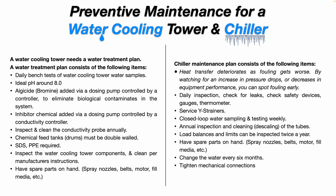Load balances and limits can be inspected twice a year. Have spare parts on hand — spray nozzles, belts, motor, fill media, and a float valve. Change the water every six months, though depending on your specific situation and the condition of your water, you may need to do it more or less often. Finally, tighten mechanical connections — check your nuts, bolts, and pipe fittings to make sure nothing is loose, damaged, missing, broken, or cracked.